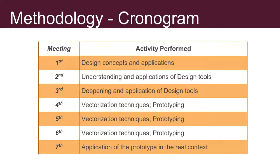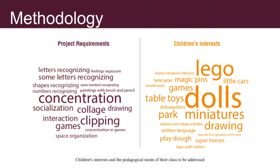The project was carried out by the training of seven young learners who developed three-dimensional social educational materials for children aged five and six from the same institution. There were seven meetings totaling 24 to 8 hours. To guide the project, the teacher pedagogue of the partner institution made a list of interests and specific pedagogical needs of the children to be met. Based on the established needs, the training with the young began.